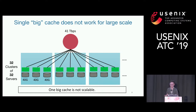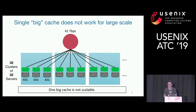Let's look at some numbers. Assuming we have 32 clusters, each with 32 servers, and each server serving 40G throughput — very typical numbers in a modern data center — then your big cache node should be as fast as 41 terabits per second, which is clearly not scalable or practical. This implies that one big cache is not a practical way to do load balancing at this scale.